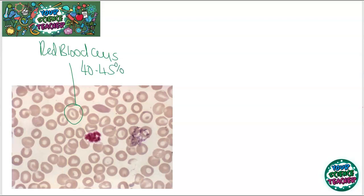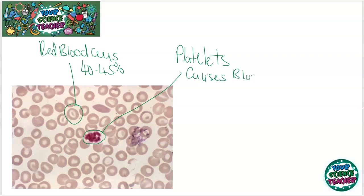So what actually makes up the rest of our blood? You can see this funny shape here in the blood — it makes up a tiny component, but it's very important. These are called platelets, and platelets are what causes blood to clot. If you cut your arm, you don't want to bleed out. Platelets run to the source of a wound and cause the blood to clot.